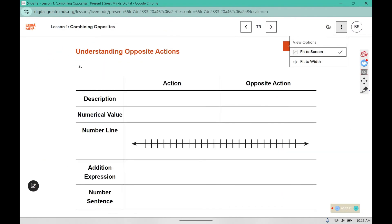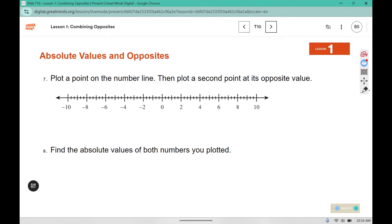Try to come up with your own for number 6. Then label your number line and fill in your boxes. Plot a point on the number line. Then plot a second point at its opposite value. How about 7? The opposite value would be negative 7. Find the absolute values of both of the numbers you plotted. Remember absolute value is the distance away from 0. 7 is 7 away from 0. And negative 7 is 1, 2, 3, 4, 5, 6, 7 away from 0 as well. Absolute value is represented by the bars on both sides of the number.